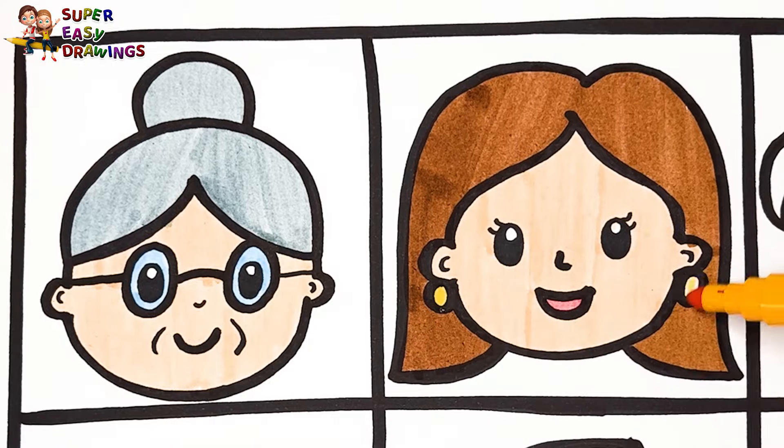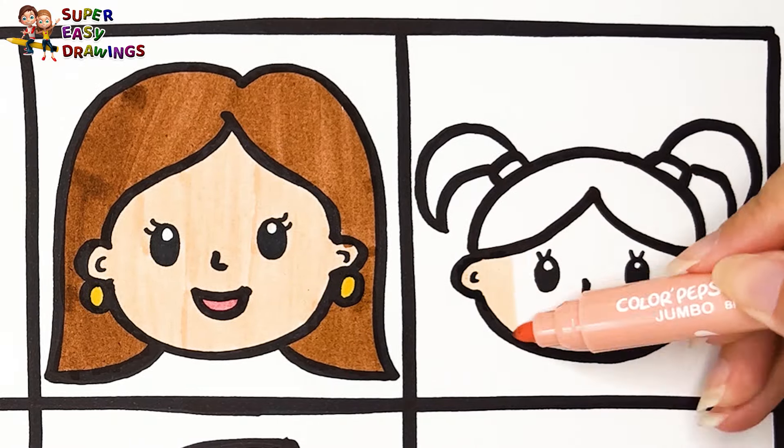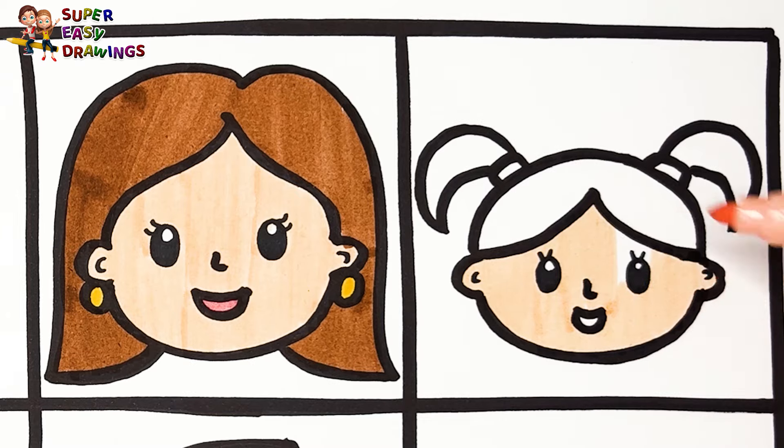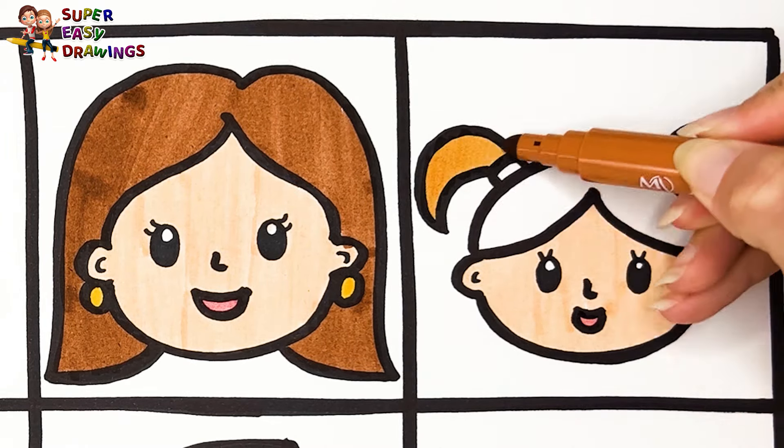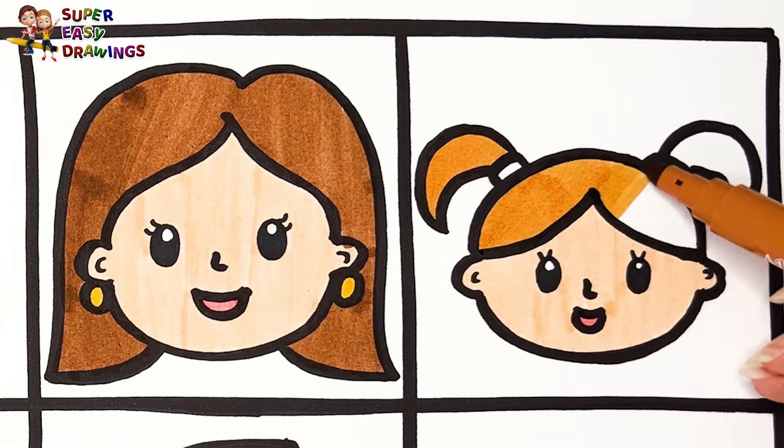Then I use yellow for her earrings. I color the girl's skin with cream. Her mouth is light red. I color her hair with light brown.